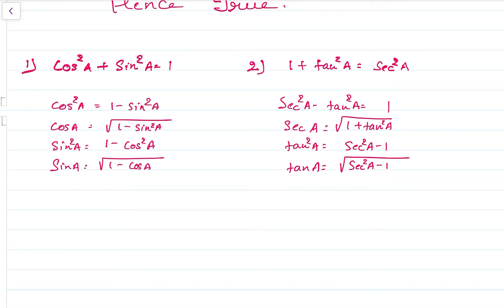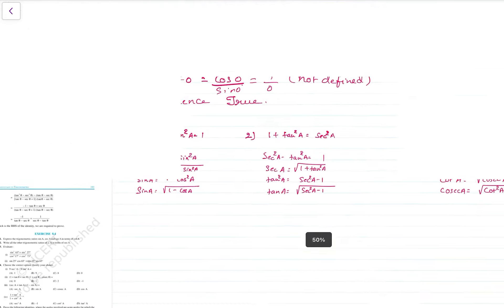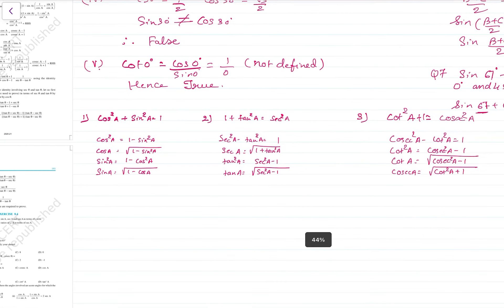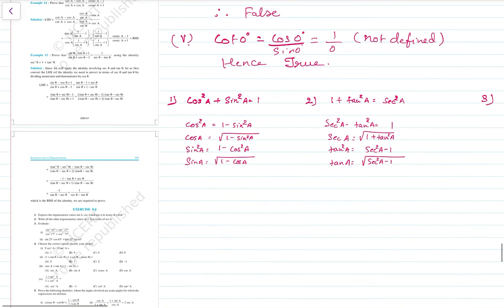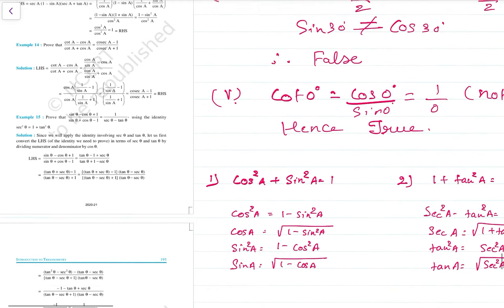In this way, we could get four identities from each of the given three main identities. So in all, if you count, you have 15 identities which can be used directly or indirectly for solving questions.